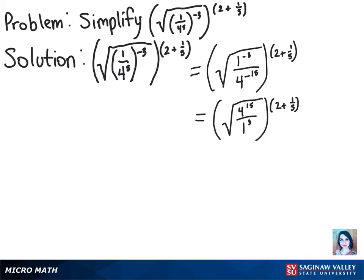Now we know that 1 cubed is just 1, so we can basically ignore the denominator there, and we'll have the square root of 4 to the 15th power raised to the 11 fifths power when we add 2 plus 1 fifth.